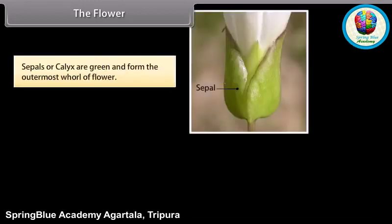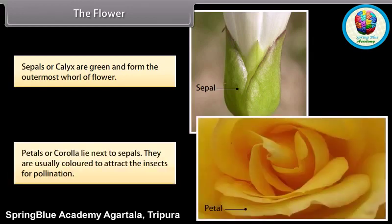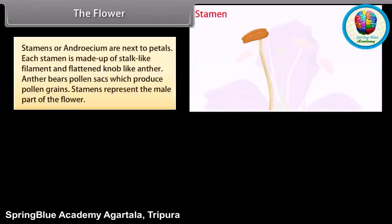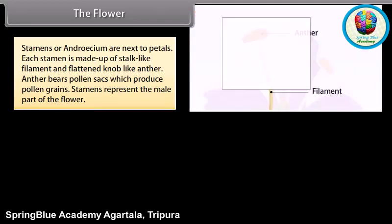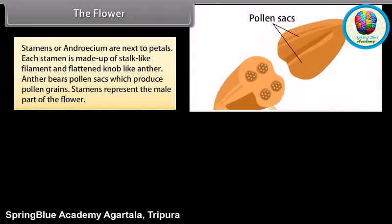Sepals, or calyx, are green and form the outermost whorl of the flower. Petals, or corolla, lie next to sepals; they are usually colored to attract insects for pollination. Stamens, or androecium, are next to petals. Each stamen is made up of a stalk-like filament and a flattened knob-like anther. The anther bears pollen sacs which produce pollen grains. Stamens represent the male part of the flower.